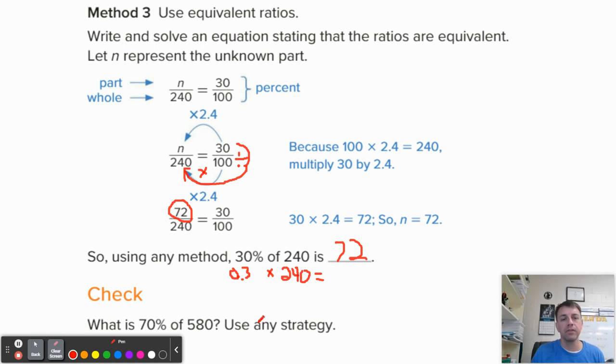Alright. I want to go over this check real quick. So again, if you want to go ahead and pause, come back, find out the answer. You can do that. Let's go ahead and set this up. So we have 70 over 100 as our percentage. And it says 70% of 580, which means 580 is the whole number. So we're going to do 70 divided by 100, which gives you 0.7. And we're going to multiply that by 580. And we're going to get an answer of 406.